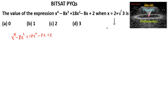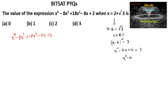When x is equal to 2 plus root 3, we can get x minus 2 is equal to root 3. Squaring on both sides, we will get x minus 2 whole square is equal to 3. That is x square minus 4x plus 4 is equal to 3, or we can get x square minus 4x plus 1 is equal to 0.